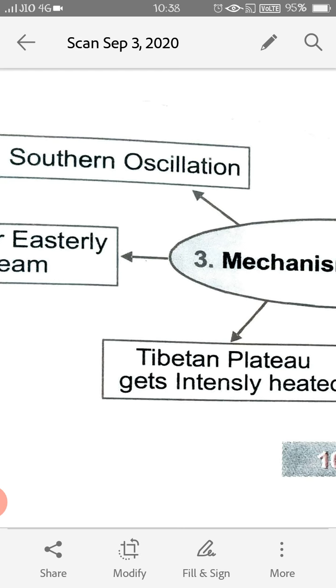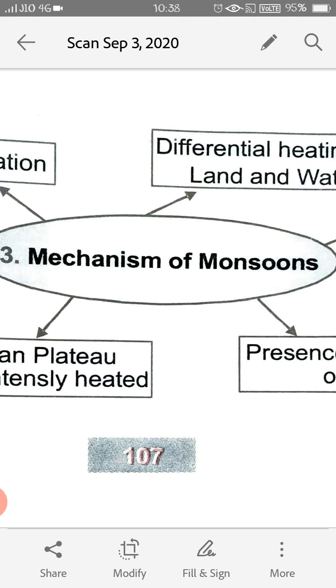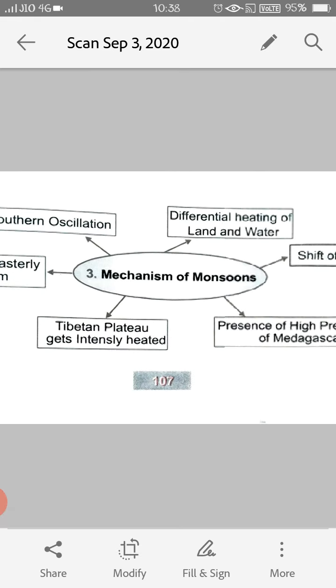A feature connected with the SO is the El Niño, phenomena in which a warm ocean current flows past the Peruvian coast in place of the cold Peruvian current. When that mixes with the Southern Oscillation, they both cause the rainfall or the monsoon in India. These are the different mechanisms of monsoon that bring monsoon in our India.